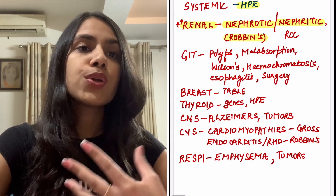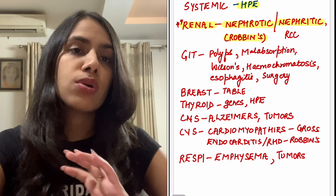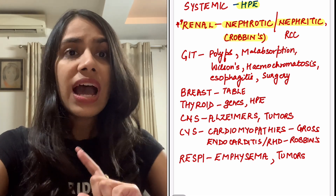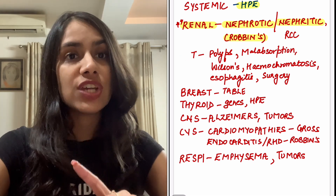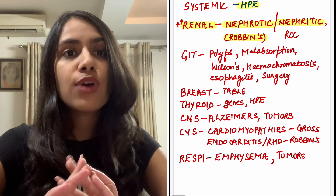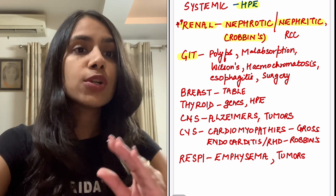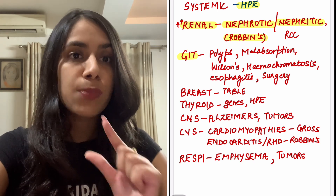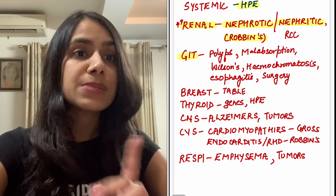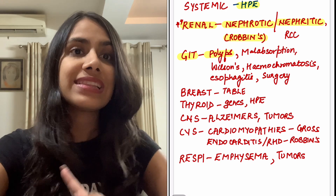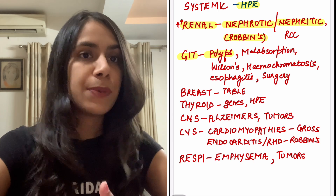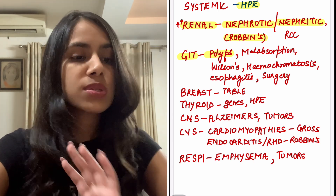For RCC, genes, risk factors, and origin are important from the PATH point of view; otherwise surgery covers a major chunk of RCC. Another underrated unit is GIT. If you've done it from medicine and covered the PATH aspect as well, that's good enough; but if you haven't, do cover it from all aspects because the topics are small. GIT overall is a smaller unit but will fetch you marks — especially from PATH: polyps and their histopath come quite frequently. Also cover malabsorptions and hepatology, integrated with medicine and surgery.